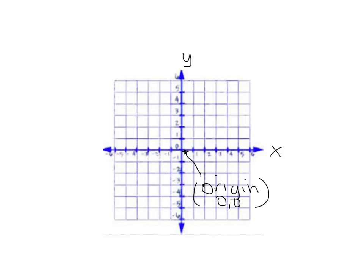From the origin on your x-axis, going to the right, you're going to be going to the positive numbers. And going to the left, you're going to be going to the negative numbers.